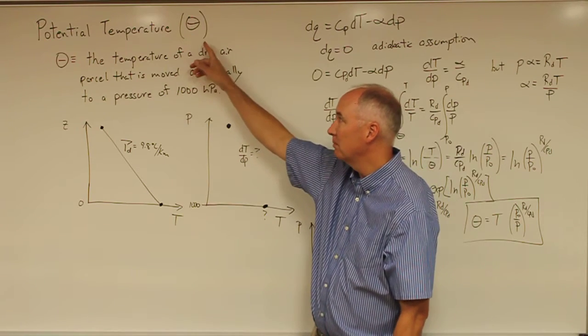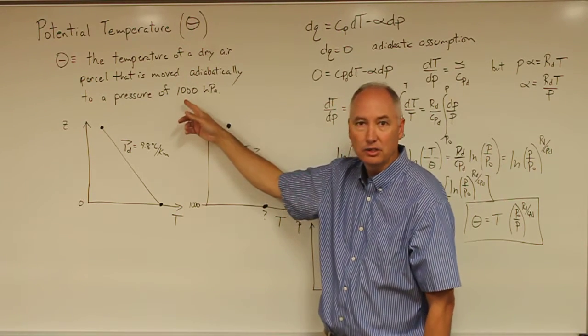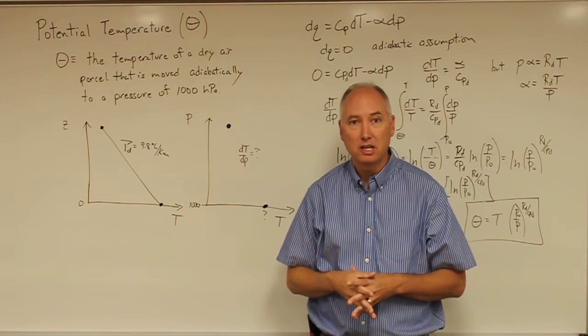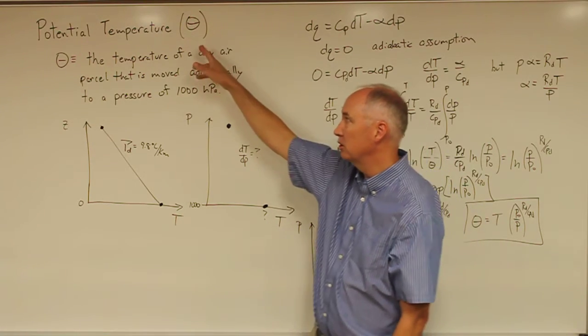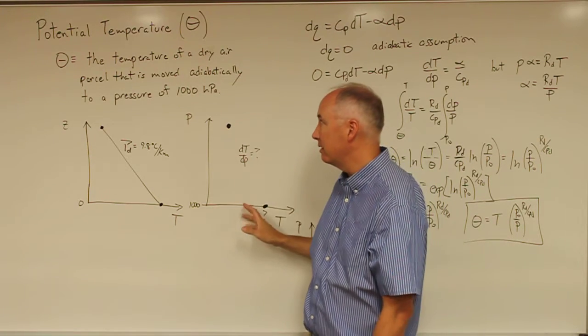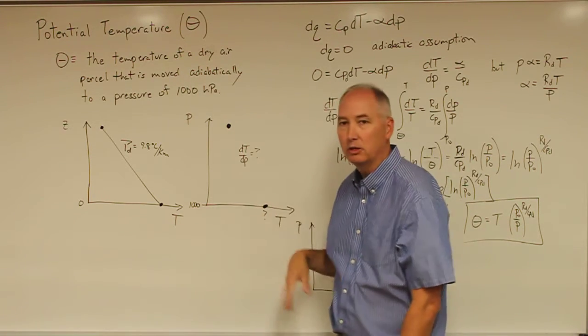If you move an air parcel to a pressure of 1,013.25, that is not going to be the potential temperature. The potential temperature will be the temperature that that air parcel achieves if you move it dry adiabatically to 1,000 hectopascals.